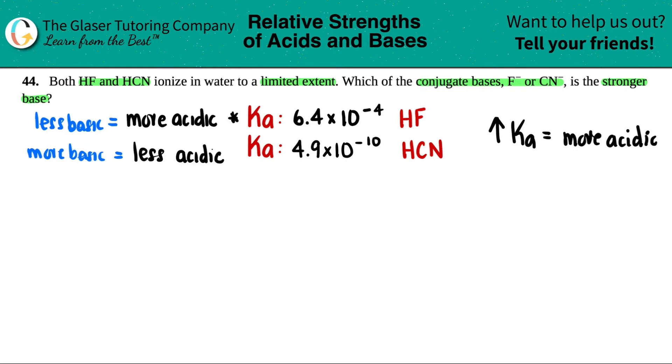But the question basically asked, which of the conjugate bases would be a stronger base? Well, if HF was more acidic, it can't be the stronger base because those bases would be very, very weak.